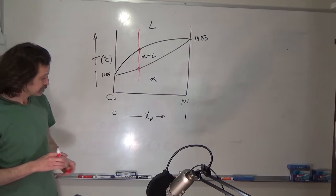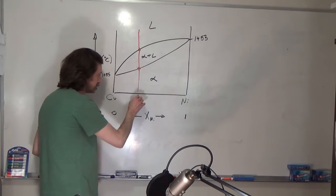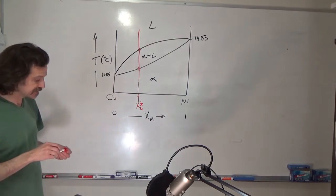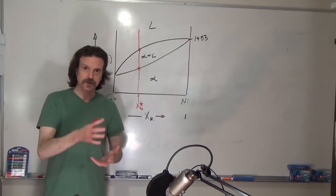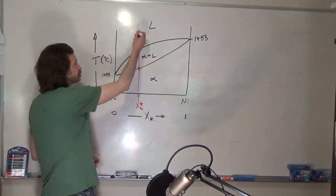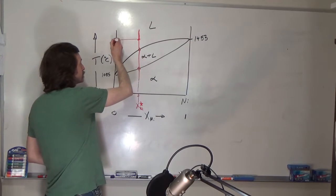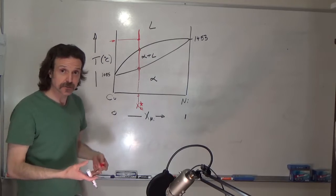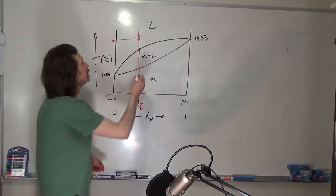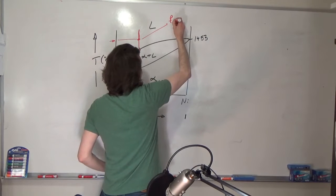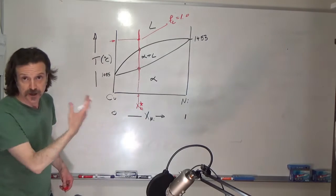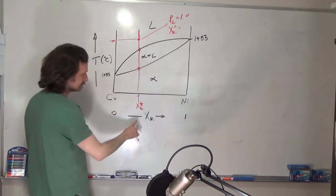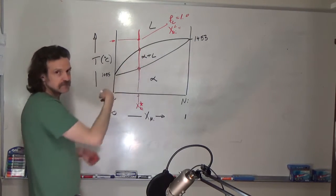Let's say I give you some composition — call this x_Ni star, the composition of interest. You put some copper and nickel in a crucible, heat it up, it melts. At a temperature above the liquidus, you can ask what phases are present: it's 100% liquid, so F_L equals 1. The composition of the liquid x_Ni^L equals x_Ni star — it's exactly everything in the system.